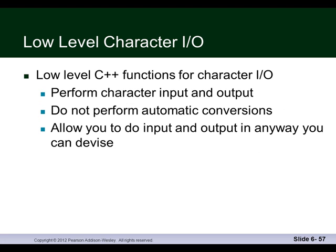There are some functions available for character I/O. We can do input and output — remember, this goes back to classes and objects. We have objects for cin and cout, and we have some member functions related to those objects that we can use for characters. These do not perform automatic conversions — they allow you to do input and output in any way you can devise.